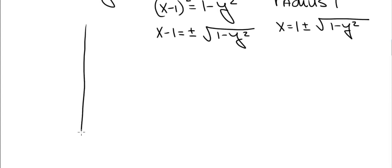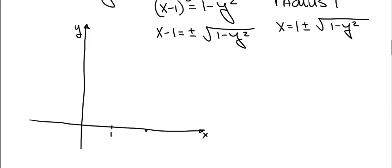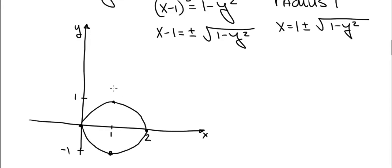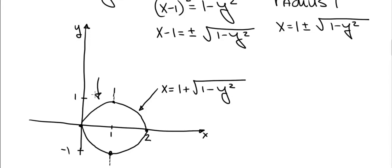Now let's sketch the base of the solid and a representative cross section. The center of the circle is at (1, 0); it extends to x equals 2 on the right, x equals 0 on the left, and y equals plus or minus 1 at the top and bottom. The right semicircle is x equals 1 plus the square root of 1 minus y squared, and the left semicircle is x equals 1 minus the square root of 1 minus y squared.